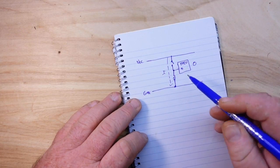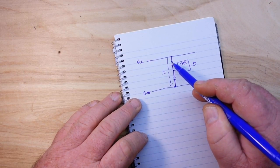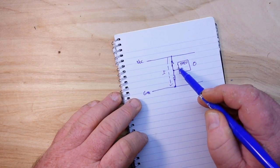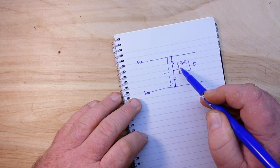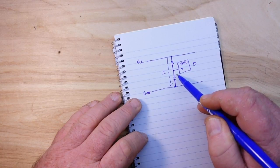current always flows to ground. That's our current flow. When we connect this switch here,